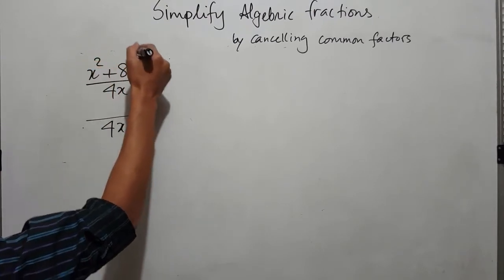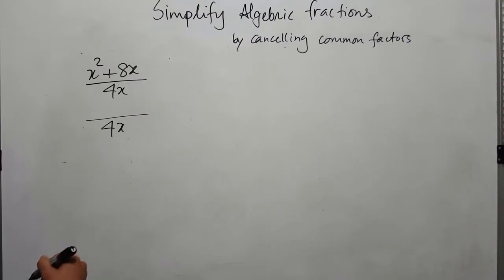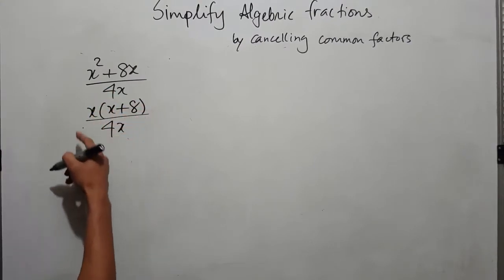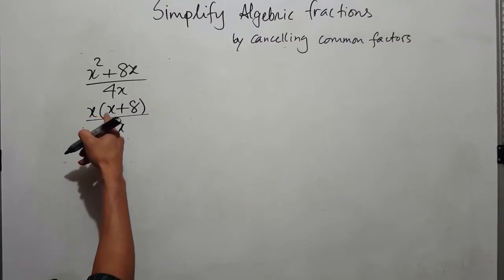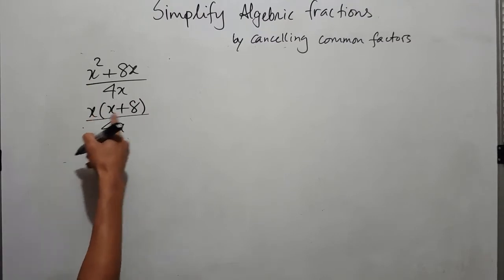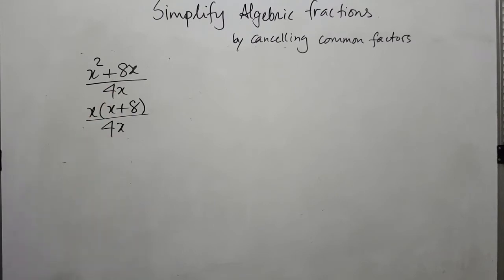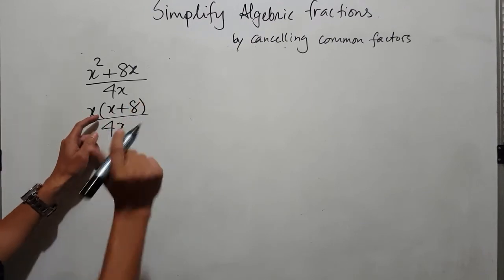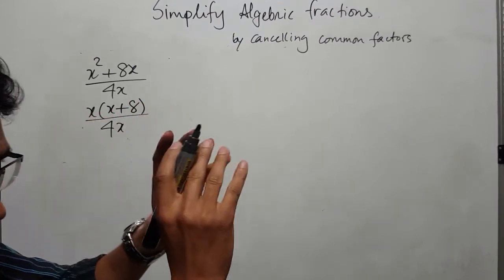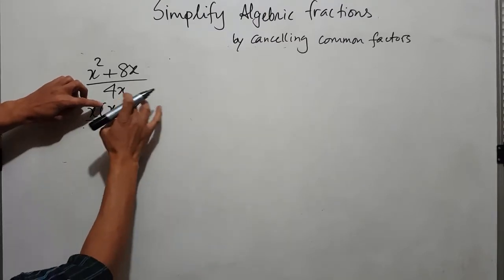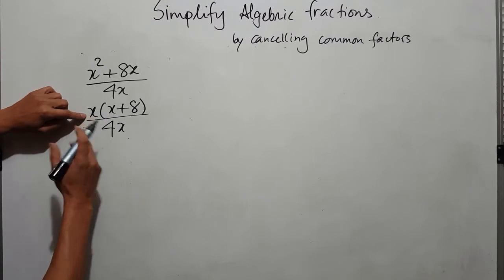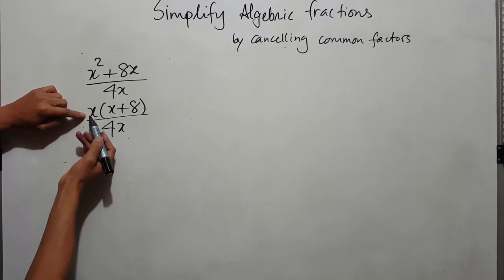What we can do is find the common factor between x squared and 8x. You can see x is the common factor, so we factor the numerator as x times (x + 8), since x times x is x squared and x times 8 is 8x. Now you are allowed to cancel, because the whole bracket is considered one element.